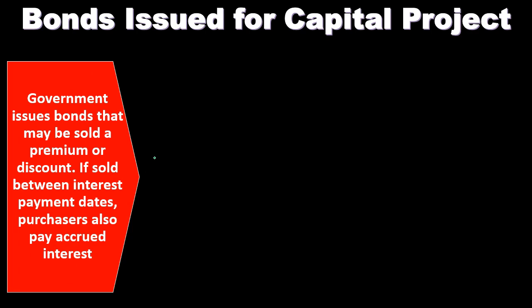When considering bond issuance at the government-wide level — the entity as a whole on an accrual basis — the recording is similar to a for-profit organization: we record the receipt of cash and the bond payable, as well as the premium or discount. In fund accounting, however, on a modified accrual basis, it will differ. We will not record the liability or the premium or discount, because modified accrual does not show long-term liabilities or long-term assets, so the payable won't appear in the capital project fund or the debt service fund.